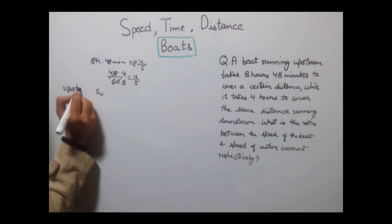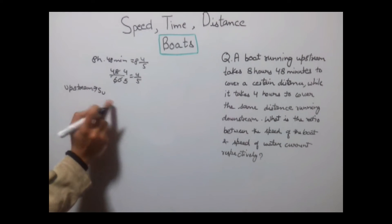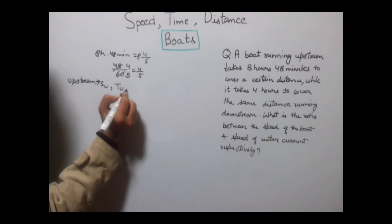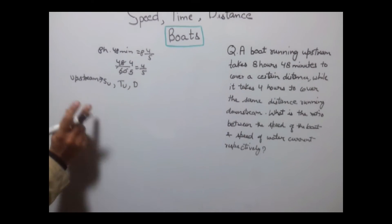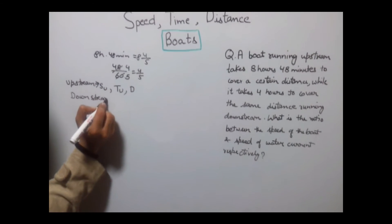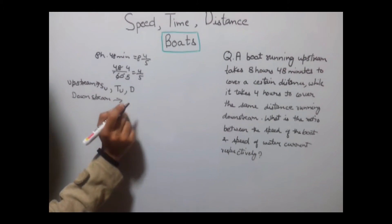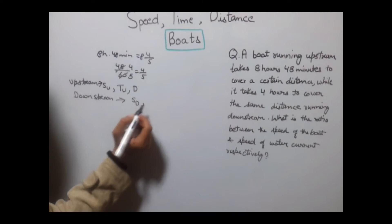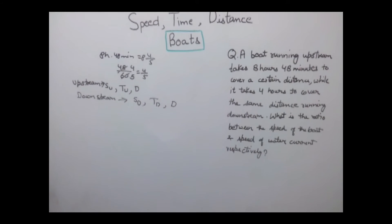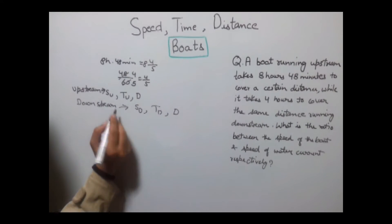Let upstream speed be represented by SU and upstream time by TU. For downstream, speed is represented by SD and time by TD. The distance is the same for both cases.